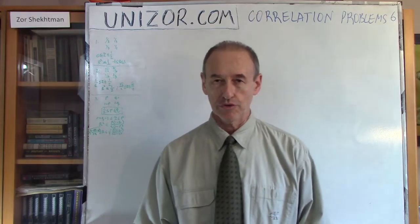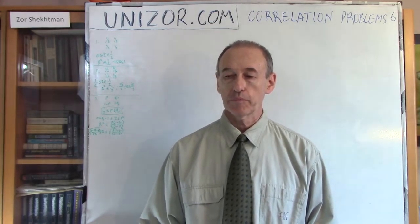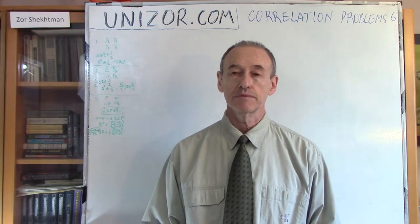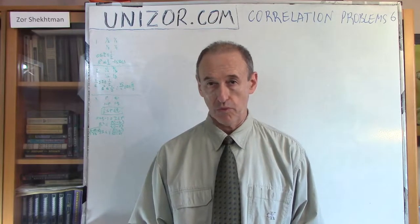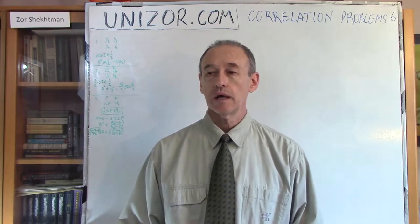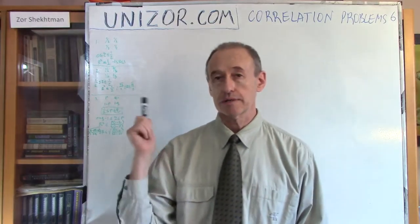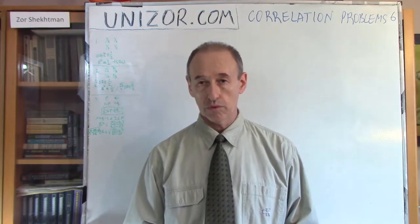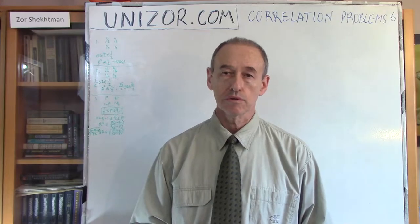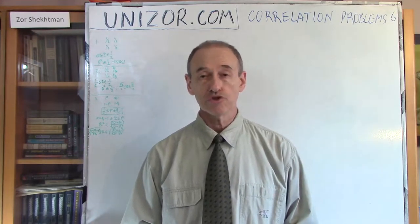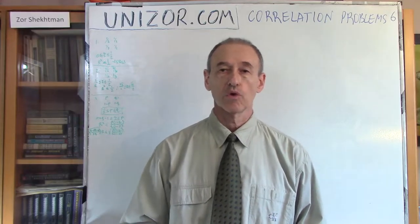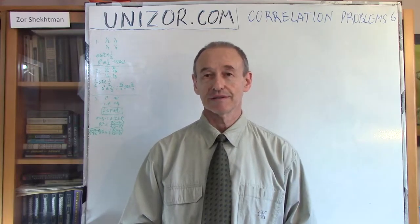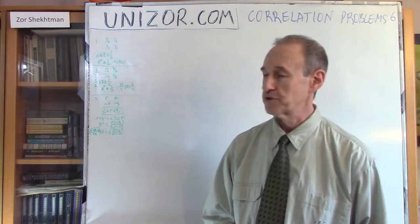Hi, I'm Zor. Welcome to Unizor Education. We continue talking about correlation among random variables. This lecture is part of the advanced mathematics course for teenagers and high school students. It's presented on unizor.com. I suggest you watch this lecture from the website because it has lots of detailed notes for each lecture, and registered students can engage in an educational process involving enrollment and exams. The site is free, so it's up to you how to use it.